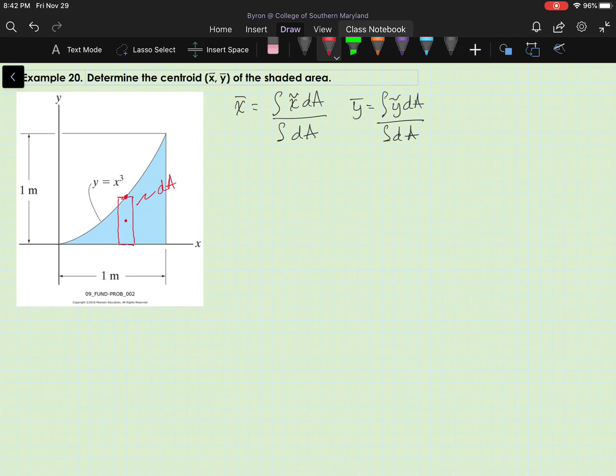This point on the curve is our generic xy. The element is dx wide. And its height is y. Let's go ahead and put that on here.